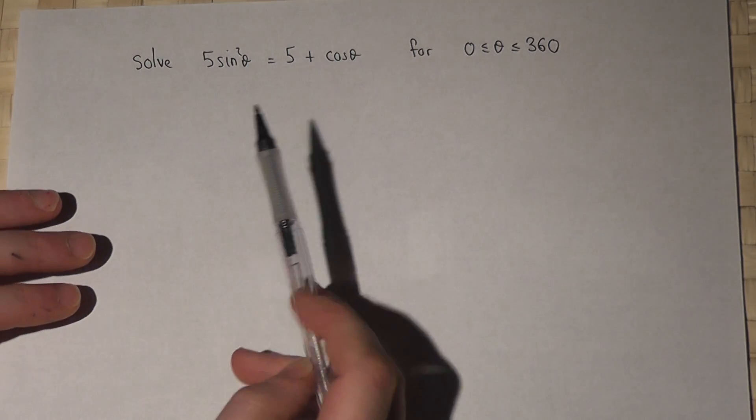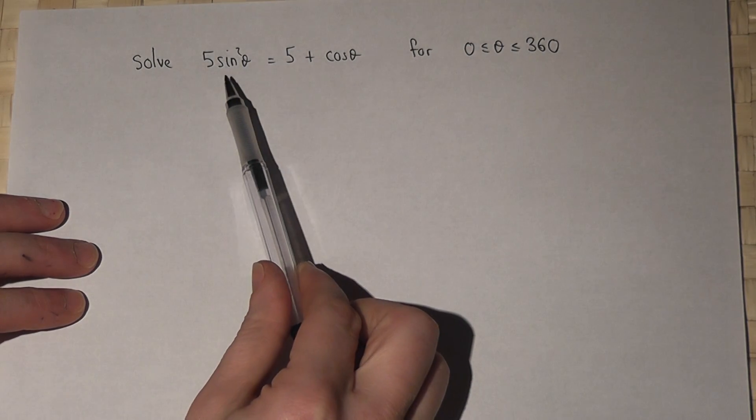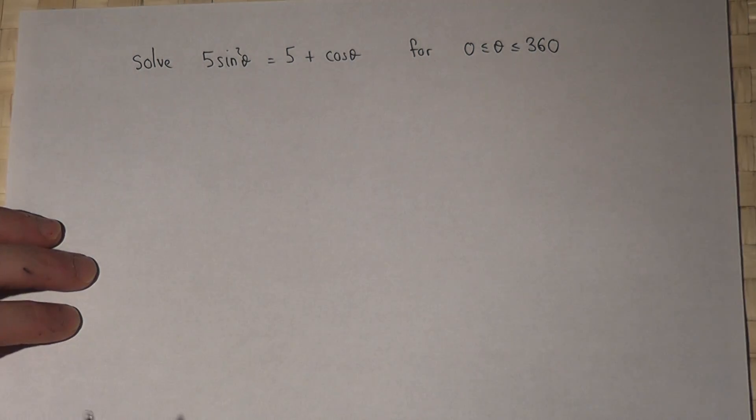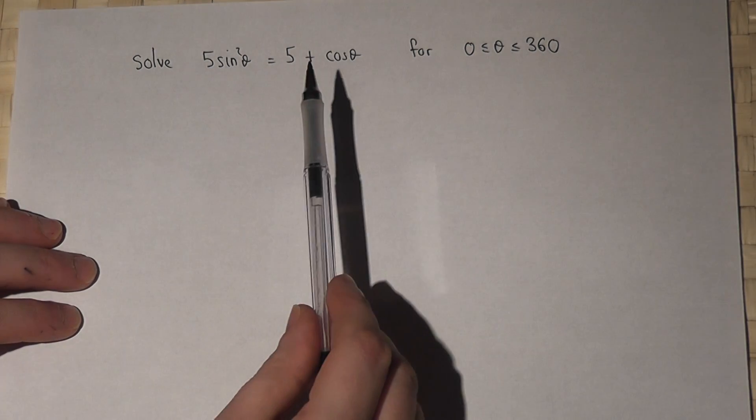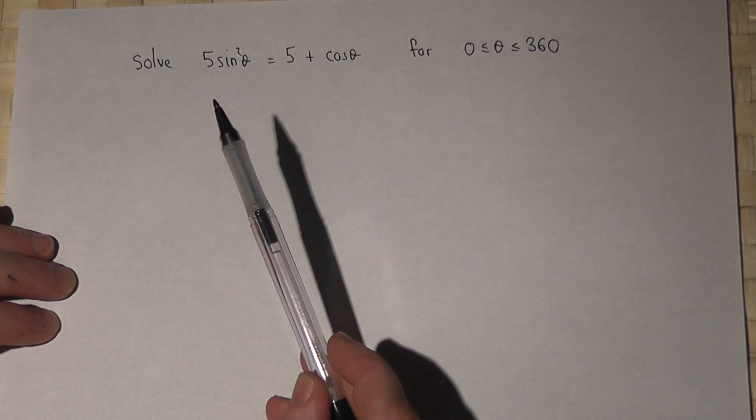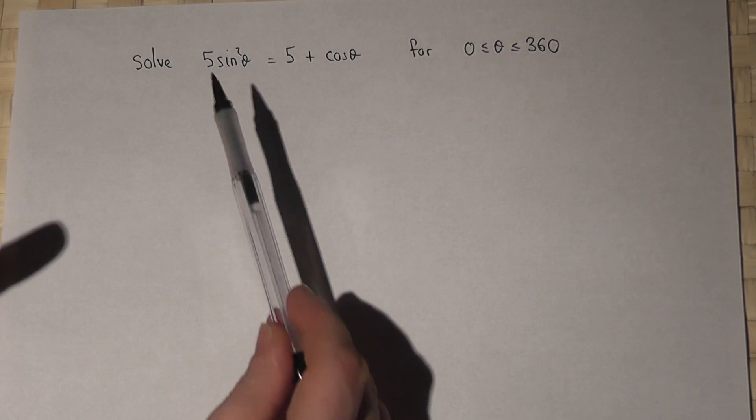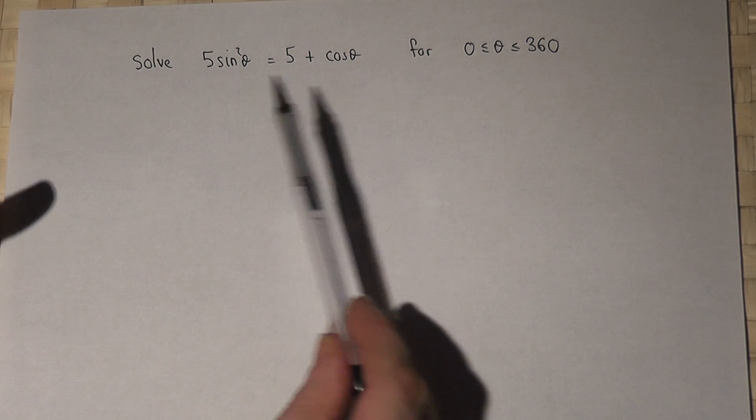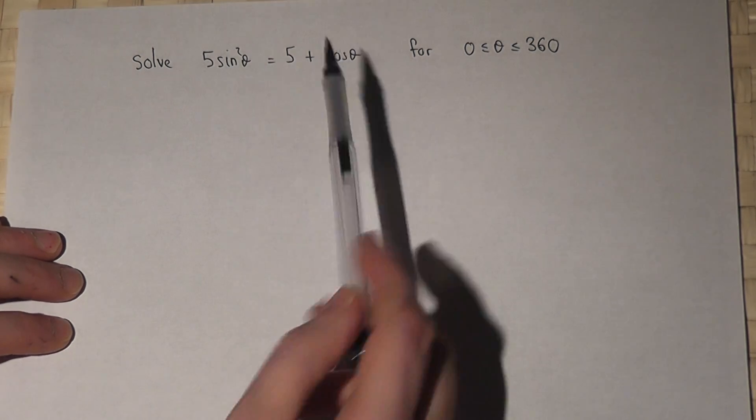In this question we're asked to solve an equation involving sine squared theta and cosine theta. Now to solve this equation we need to have either just a sine or just a cosine. We've got both sines and cosines.